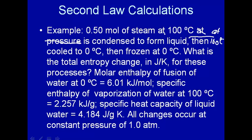This is an isothermal condensation of steam into liquid water. Then we have that liquid water, which we're going to cool down to 0°C, and then freeze that water at 0°C. Let's calculate the total entropy change for these processes. Here's some useful information: we have the enthalpy of fusion, the enthalpy of vaporization, the heat capacity of liquid, and everything is done under constant pressure.